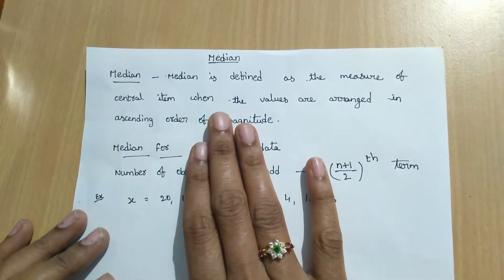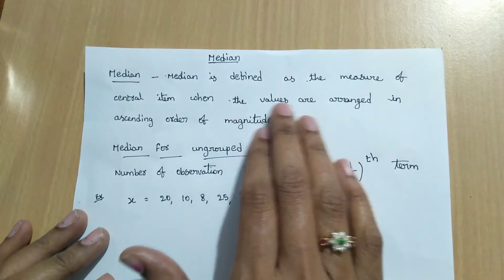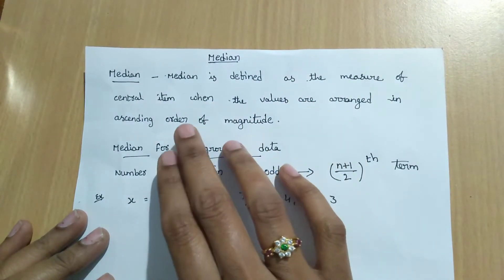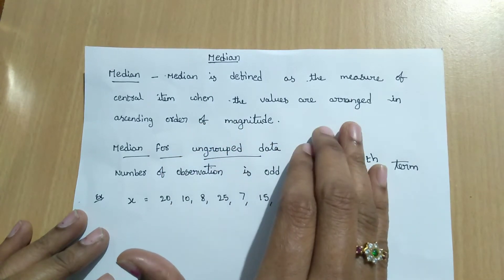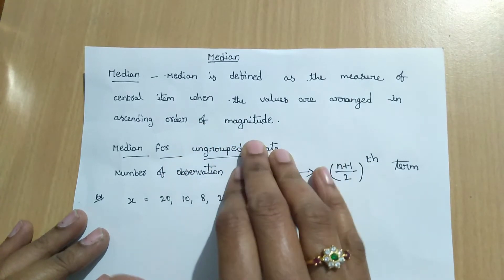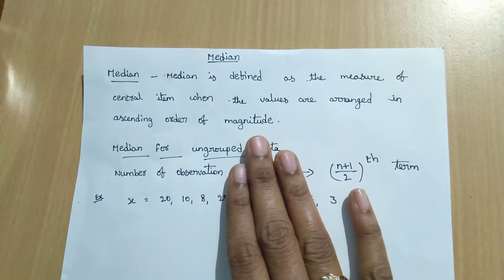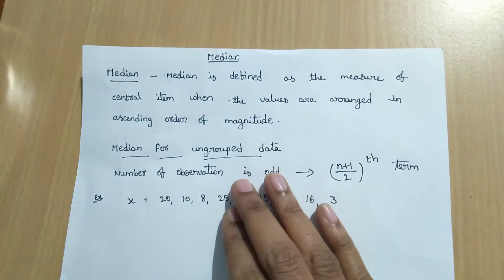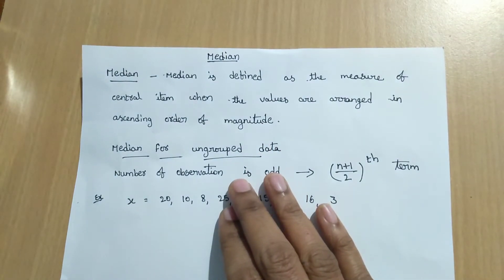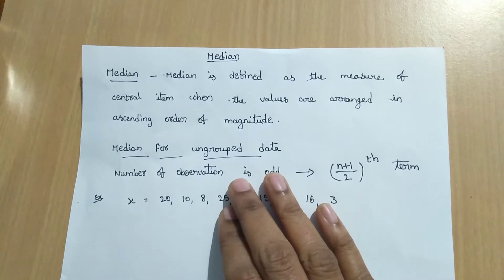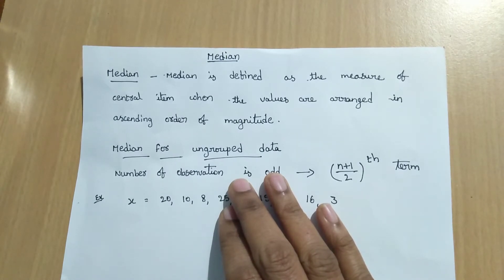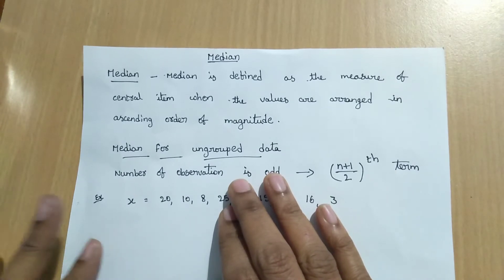Median. What is median? Median is defined as the measure of the central item when the values are arranged in ascending order of magnitude. Median is nothing but the central value of the data, when the data is arranged in ascending order.